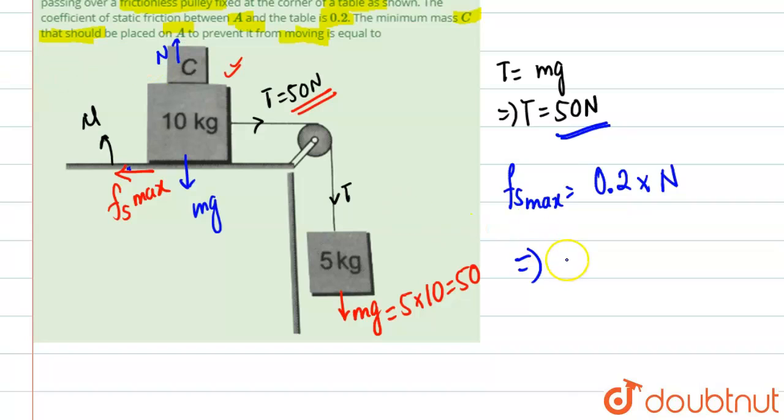This is normal force, so we'll calculate Fs max. Fs max is basically equal to 50, which will be equal to 0.2 N. From here, we get N will be equal to 50 divided by 0.2, which will be 250 Newton.